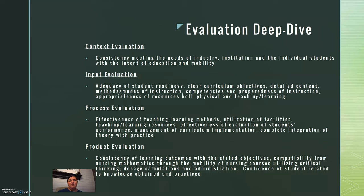Now let's take a deep dive into evaluation. There are four different things you are truly looking for when completing an evaluation. The first is context: consistency in meeting the needs of industry, the institution, and the individual student with the intent of education and mobility. For nursing students, they are taking a nursing class so they can move into the nursing program and successfully complete the pharmacology class, which is about 75% dosage calculations.